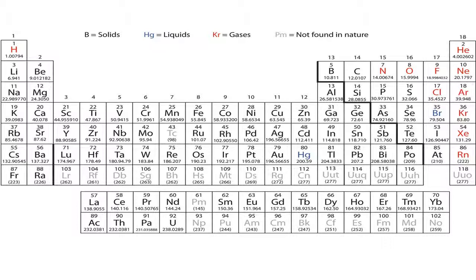On the right-hand side where you see B, Si, As, Te, and At, there's a bold staircase line going down. Everything to the left of that staircase is a metal — aluminium is a metal — but above the staircase, boron, carbon, and nitrogen are not metals. So most of the periodic table is metals. Elements shown in red are gases, blue are liquids, and black are solids at room temperature. There are only two liquids at room temperature: Hg, which is mercury, and Br, which is bromine.